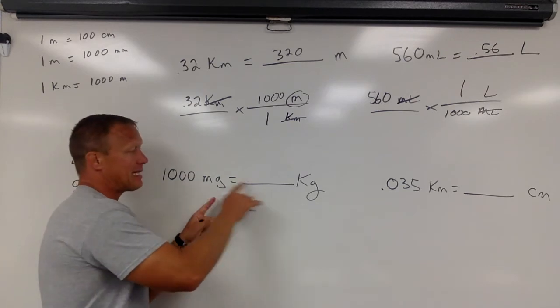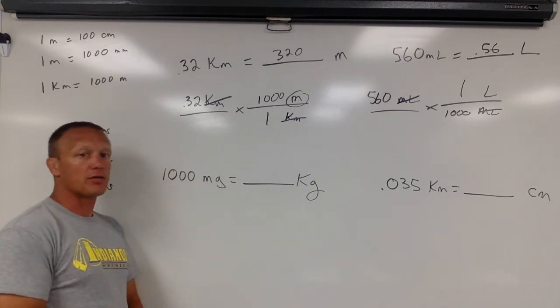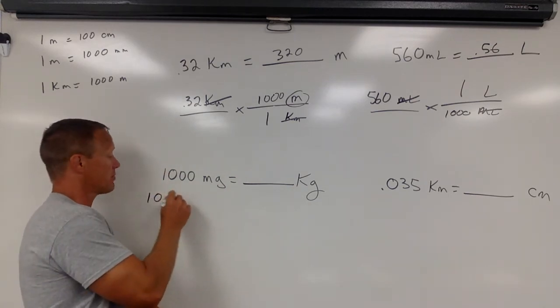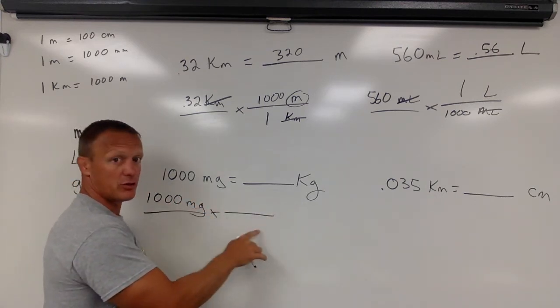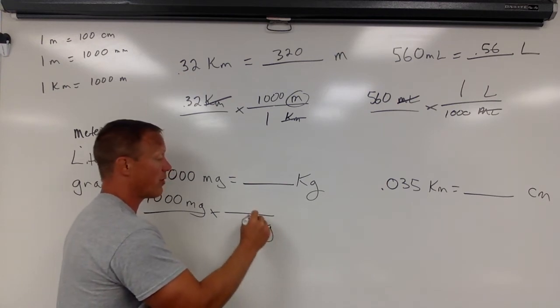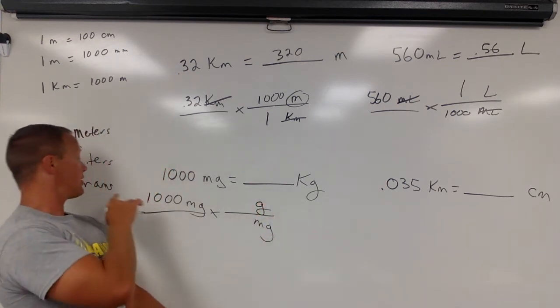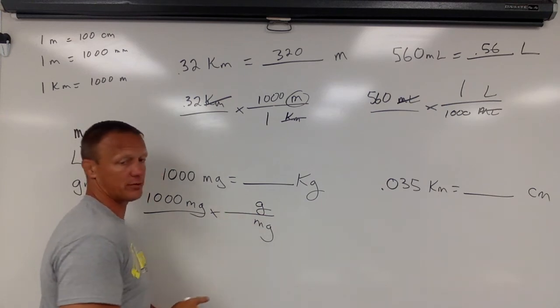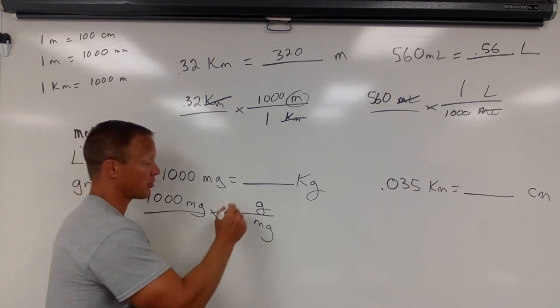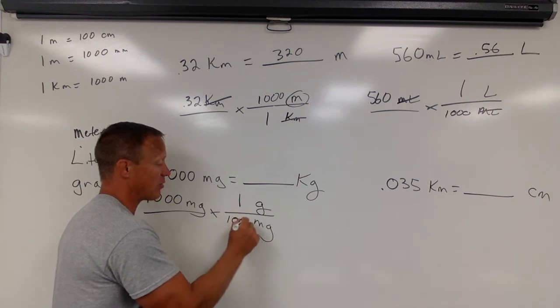Notice this one is from milligrams to kilograms. We don't have a base unit there, but I'm still going to use the base unit. So I'm going to start with 1,000 milligrams. Again, this label needs to go on the bottom. I'm always going to the base unit. In this case, the base unit is grams. We have to know this conversion. A gram is bigger, so we say every gram contains 1,000 milligrams.